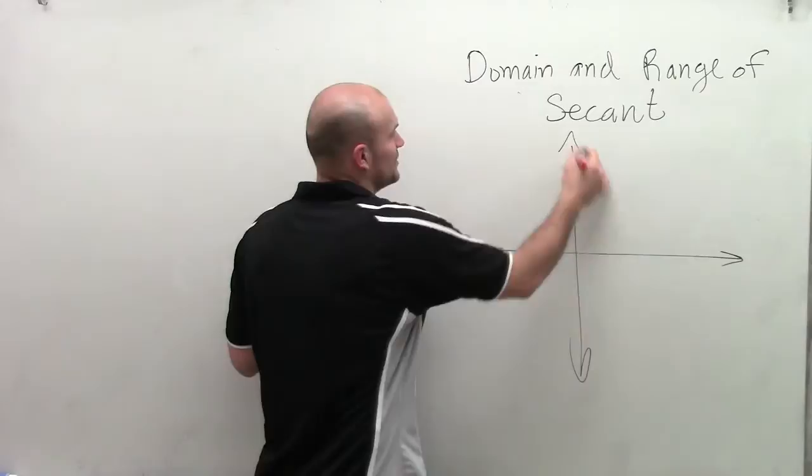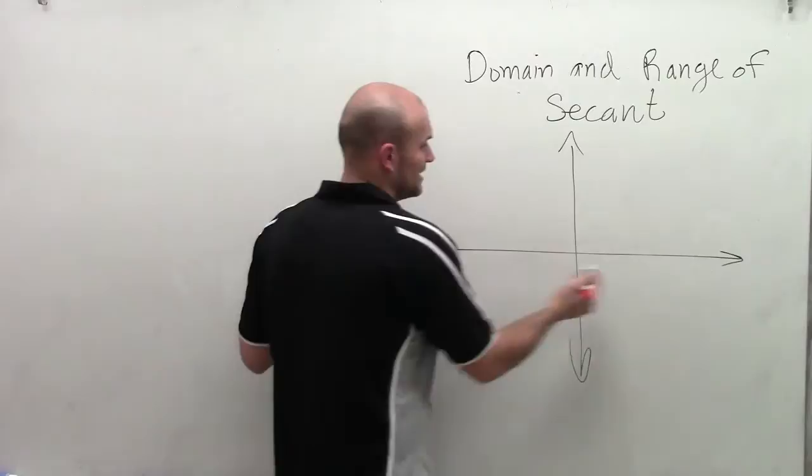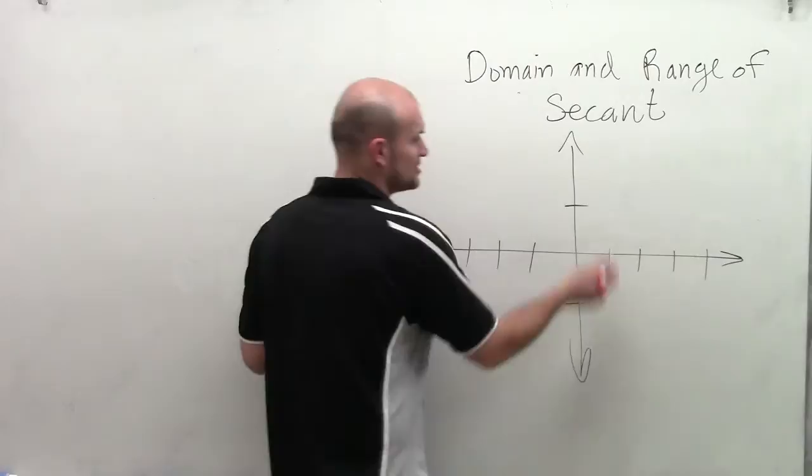First thing we need to do is graph the cosine function to help us graph the secant. So 1, 2, 3, 4, 1, 2, 3, 4. The cosine function starts up there, goes down, crosses up there, back up.